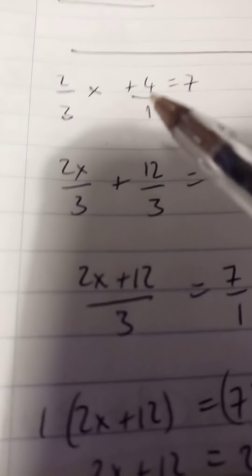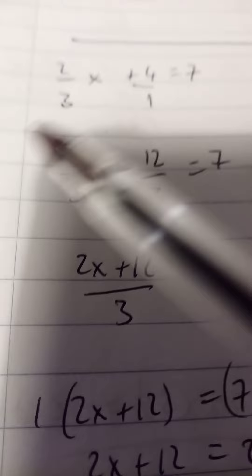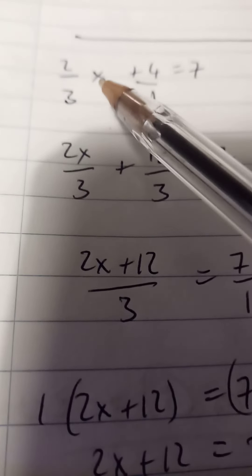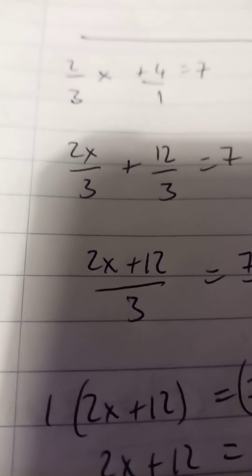Again, this method of getting a common denominator on one side is very useful if they have different denominators there. And the second thing to remember is if the x looks like it's in the middle, it's actually attached to the top of that fraction.